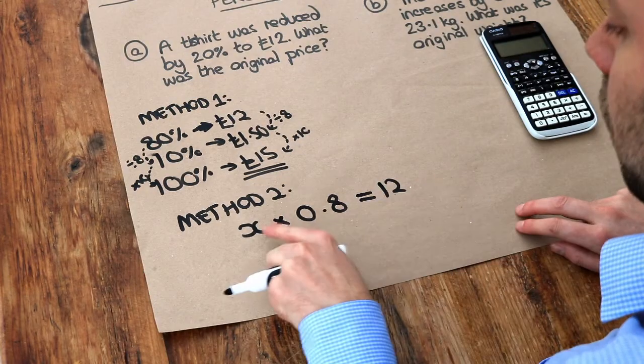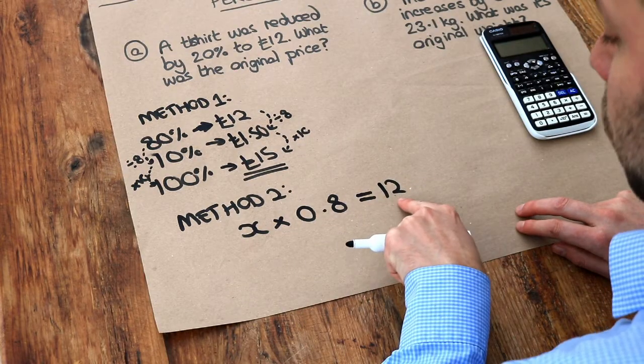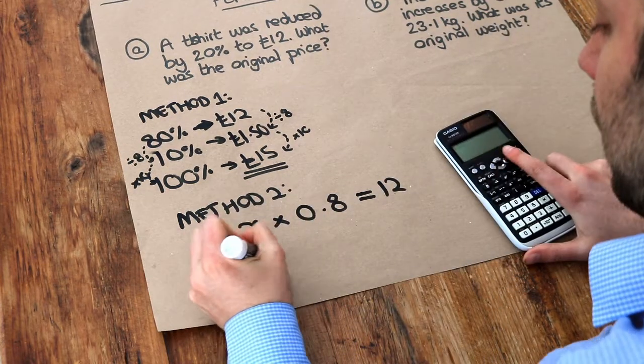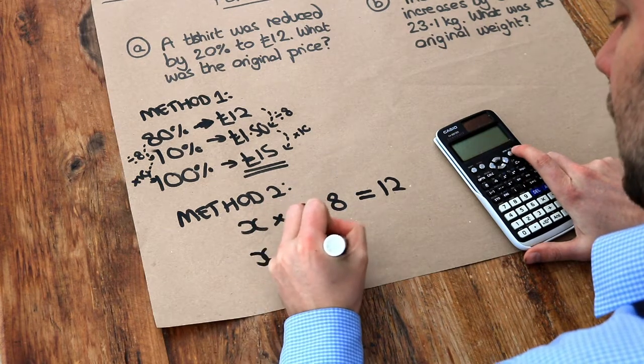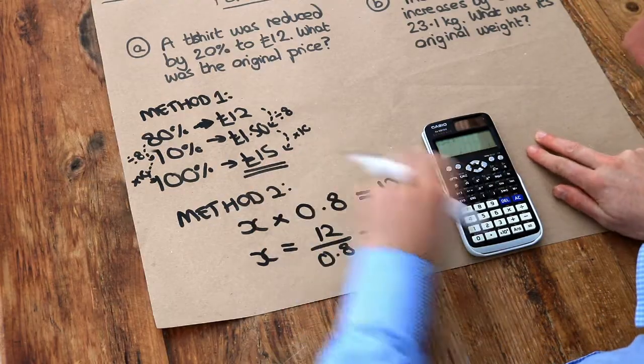And then we can just use a bit of algebra. Well, if something times by 0.8 is 12, then we can do 12 divided by 0.8 to get back to the original value. So I just need to do x equals 12 divided by 0.8. And that's £15, which is exactly the same value as we got here.